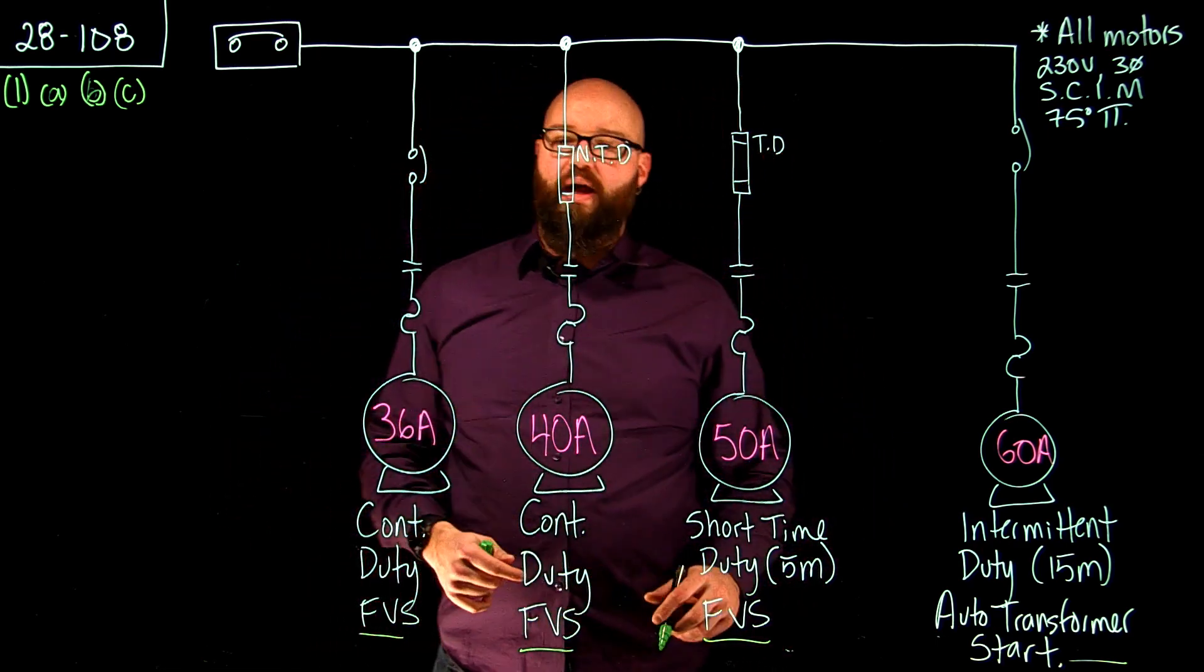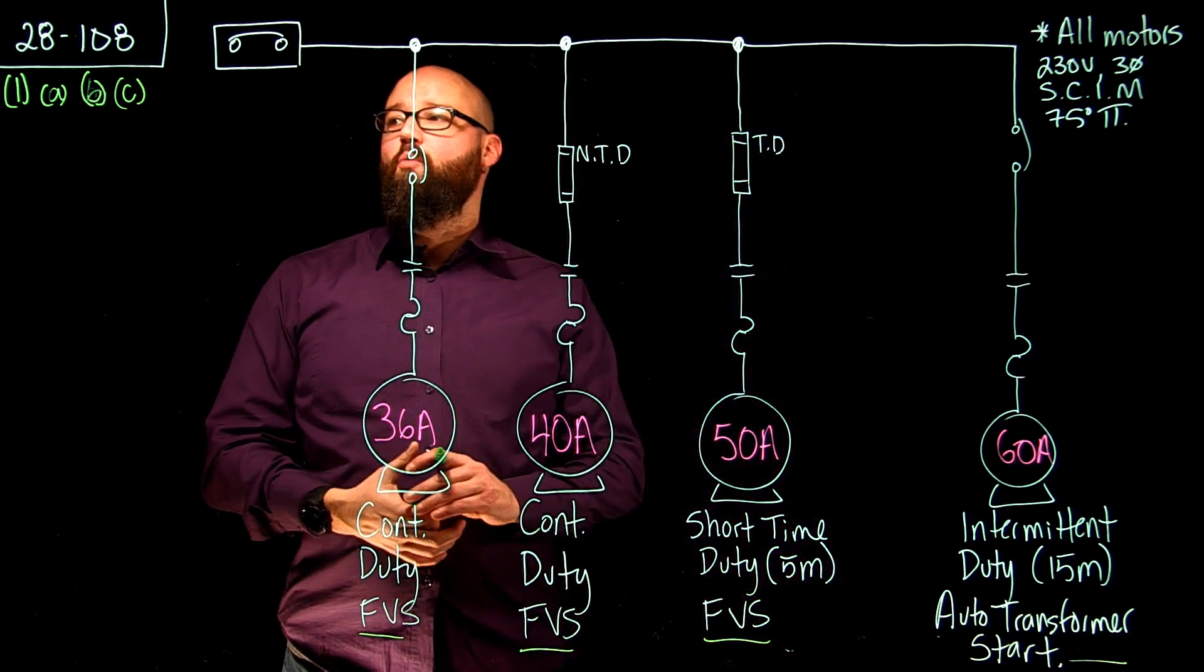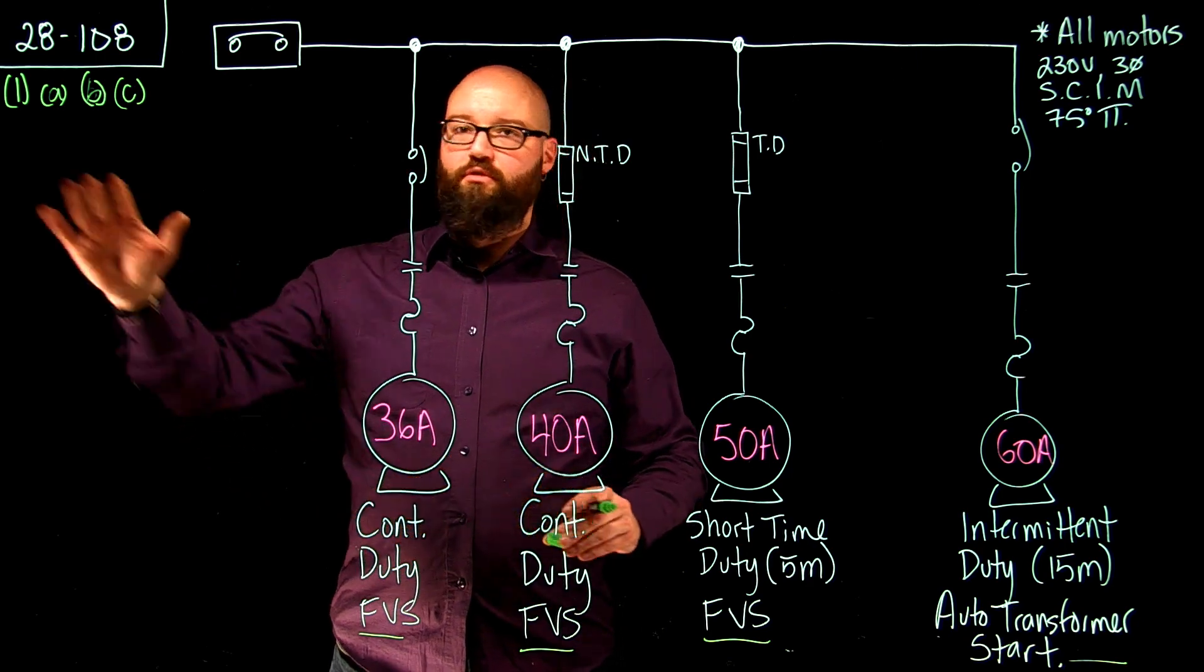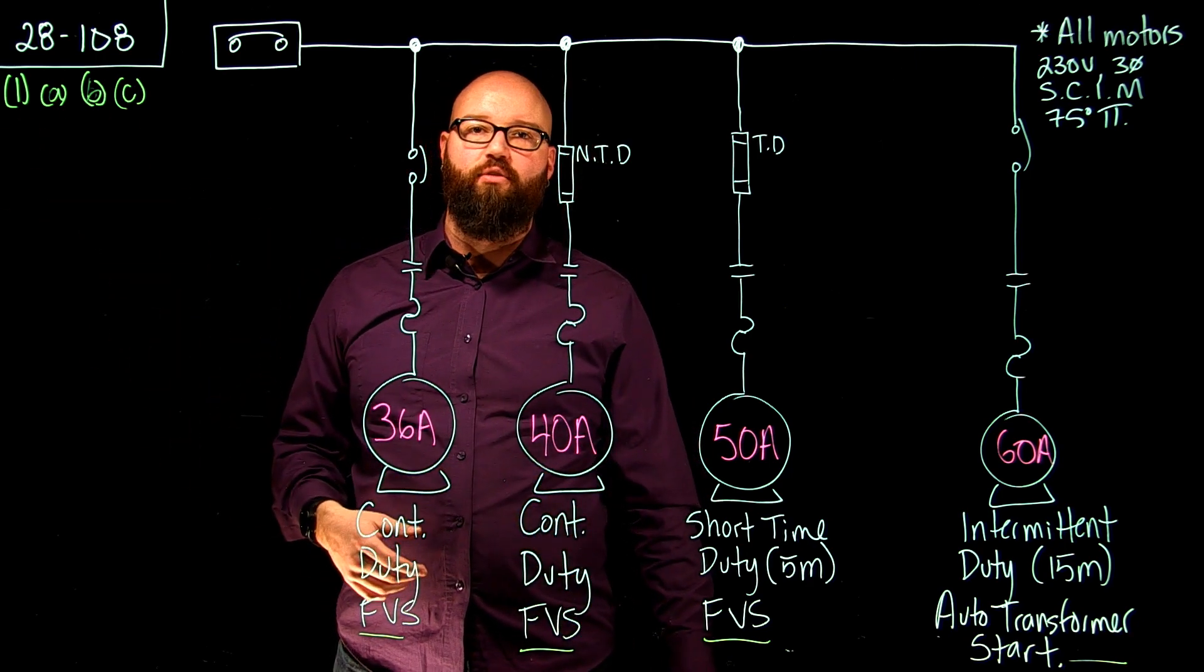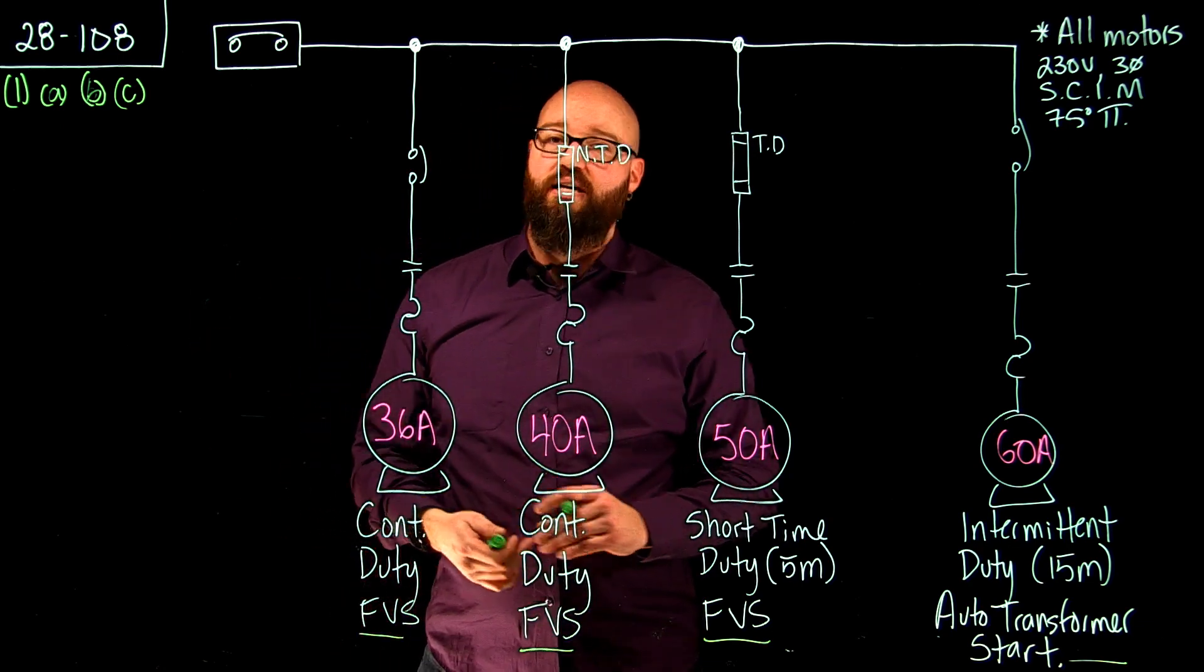So we're going to start with our Continuous Bank. It tells me in Sub Rule 1 Item A to treat them all as continuous 125% plus the FLAs of all the rest. It's no different in C. It tells me the same thing.